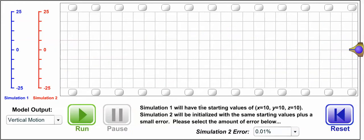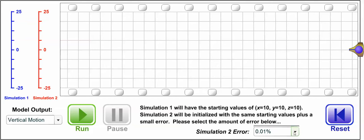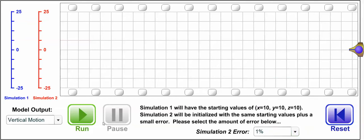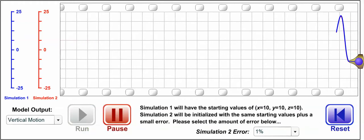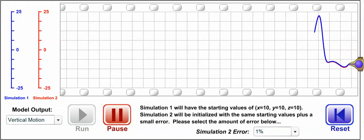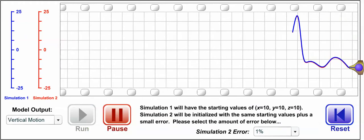Now let's see what happens when the initialization error in simulation 2 is a bit larger, 1% this time. We'll start the simulations, and we see that there's near-perfect agreement initially again.